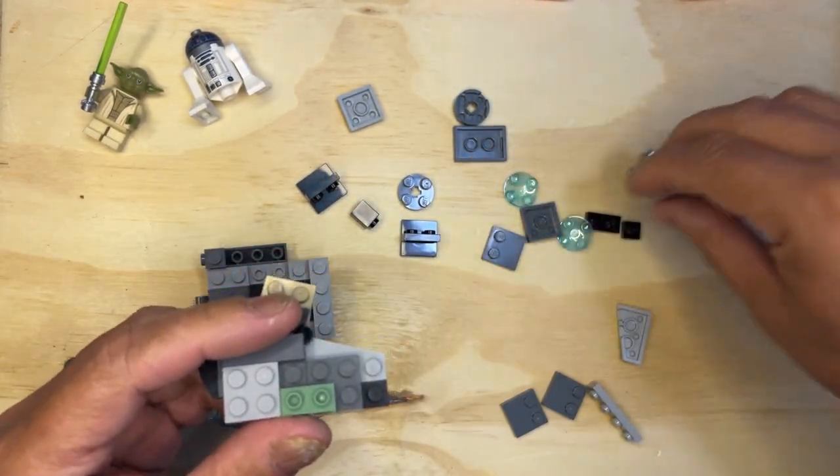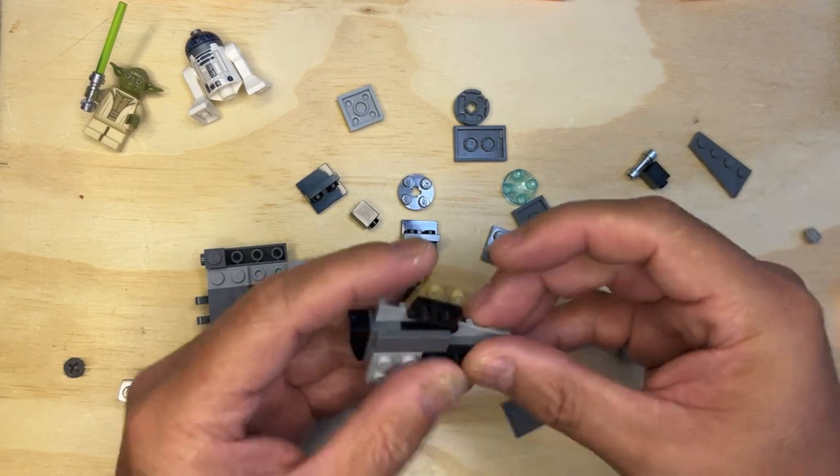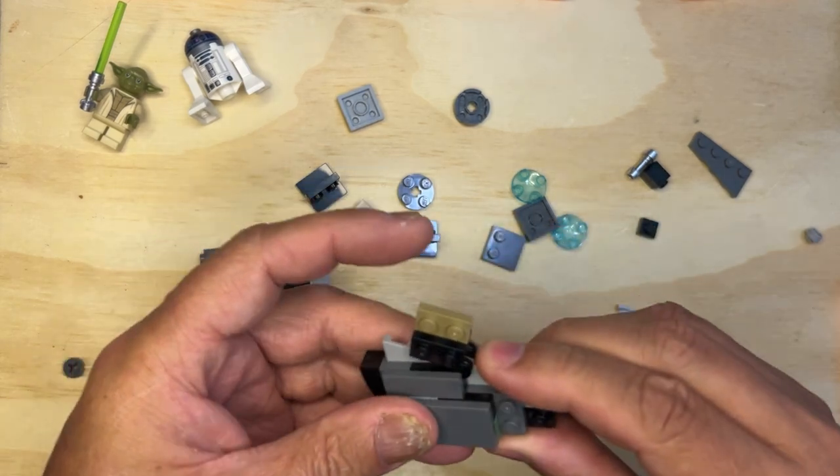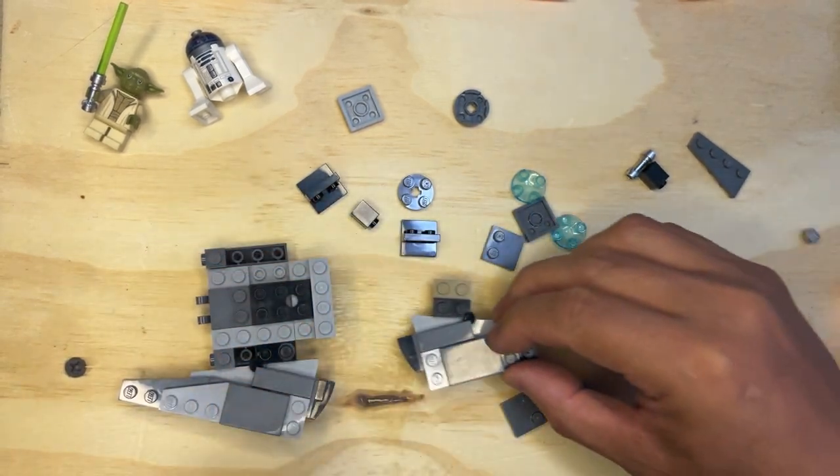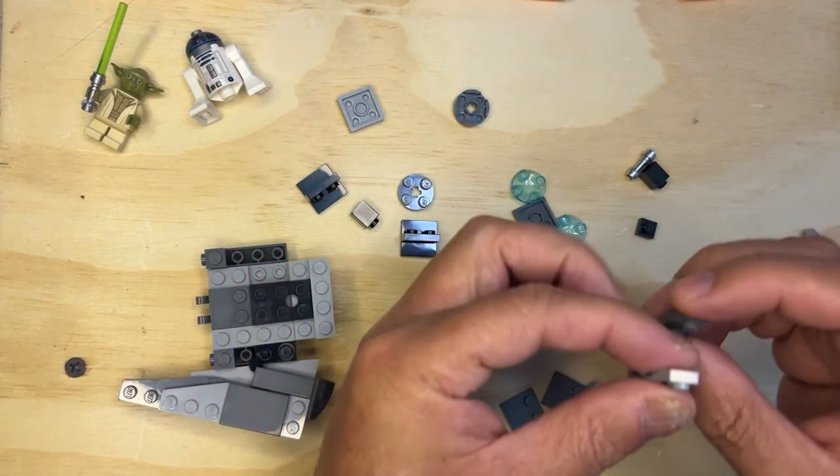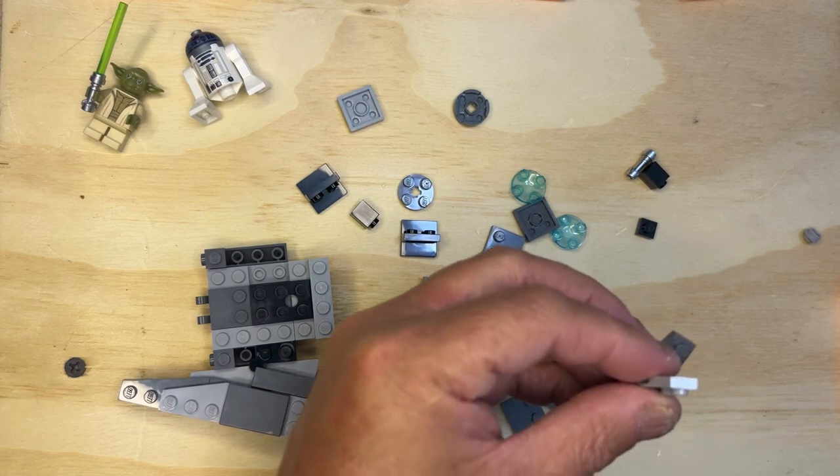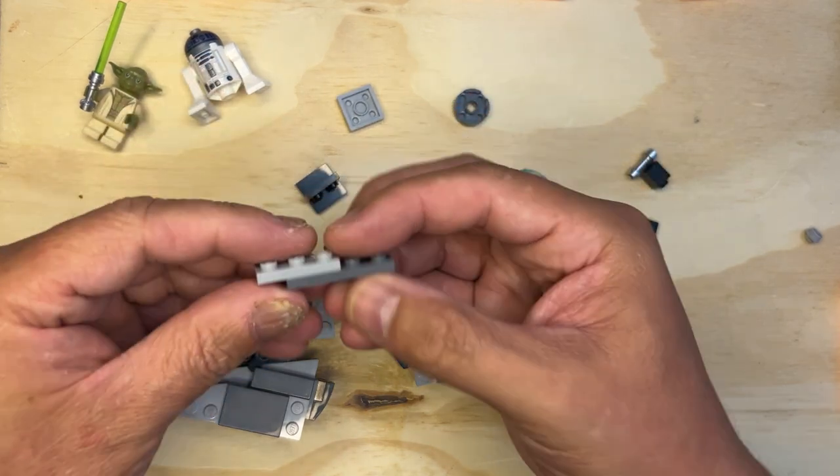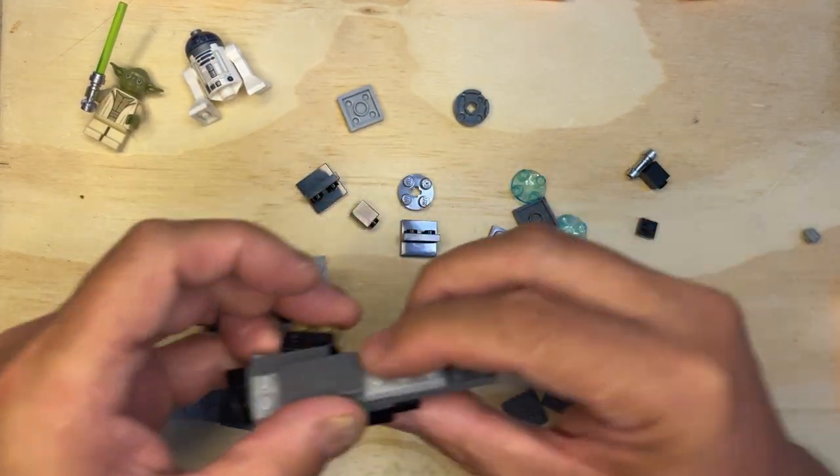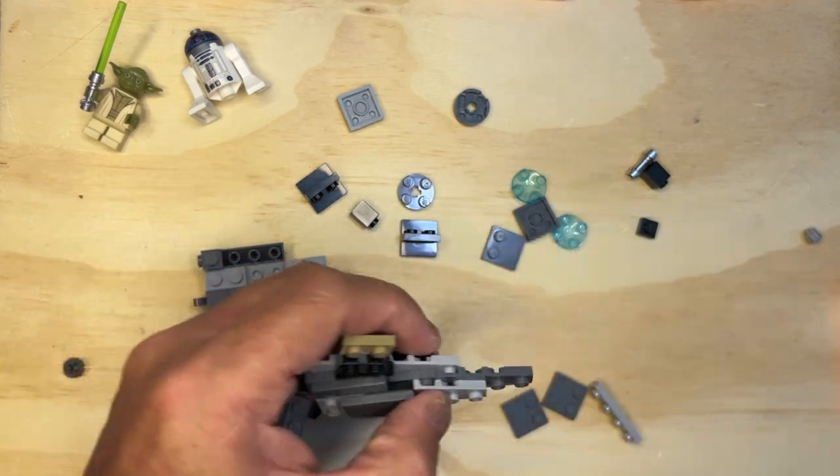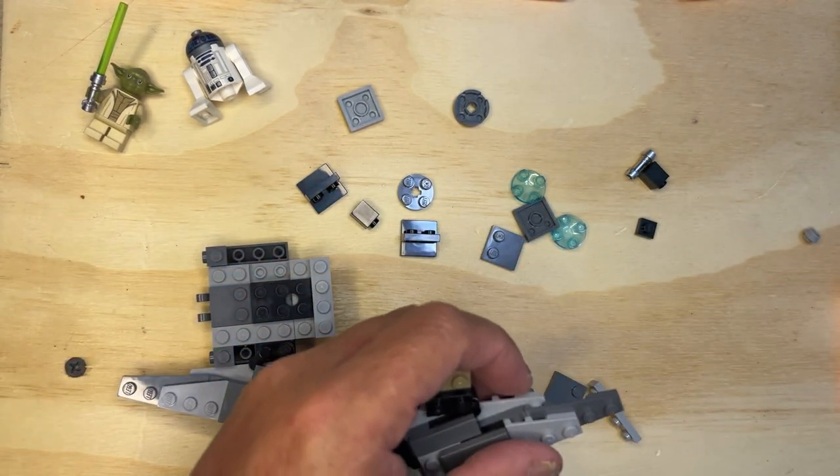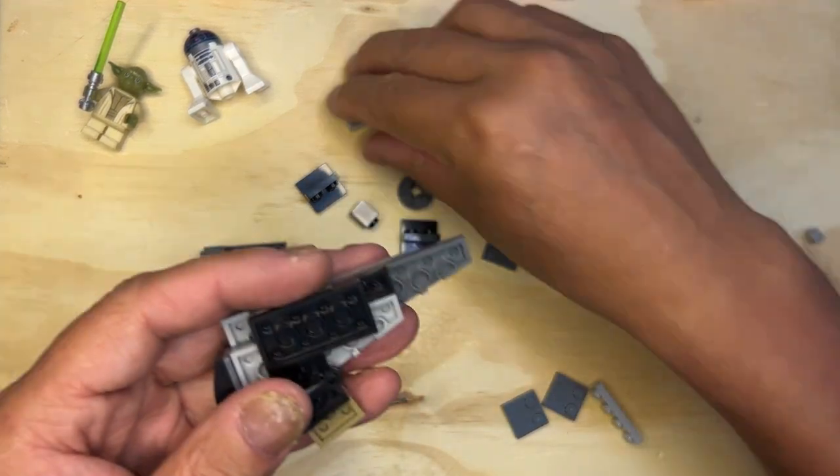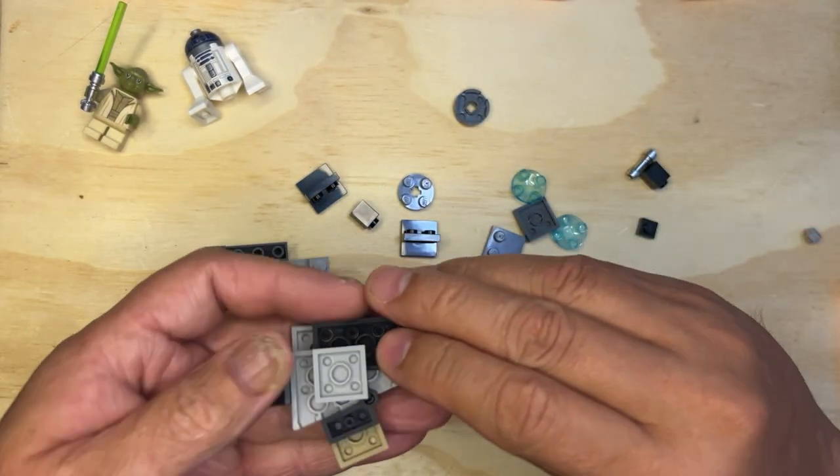So I need this and this, this two by three flat plate. Oh yeah, then I need to do this. Okay, and then remember this goes on there like that so it can sit like that. Okay, let's see where we are.